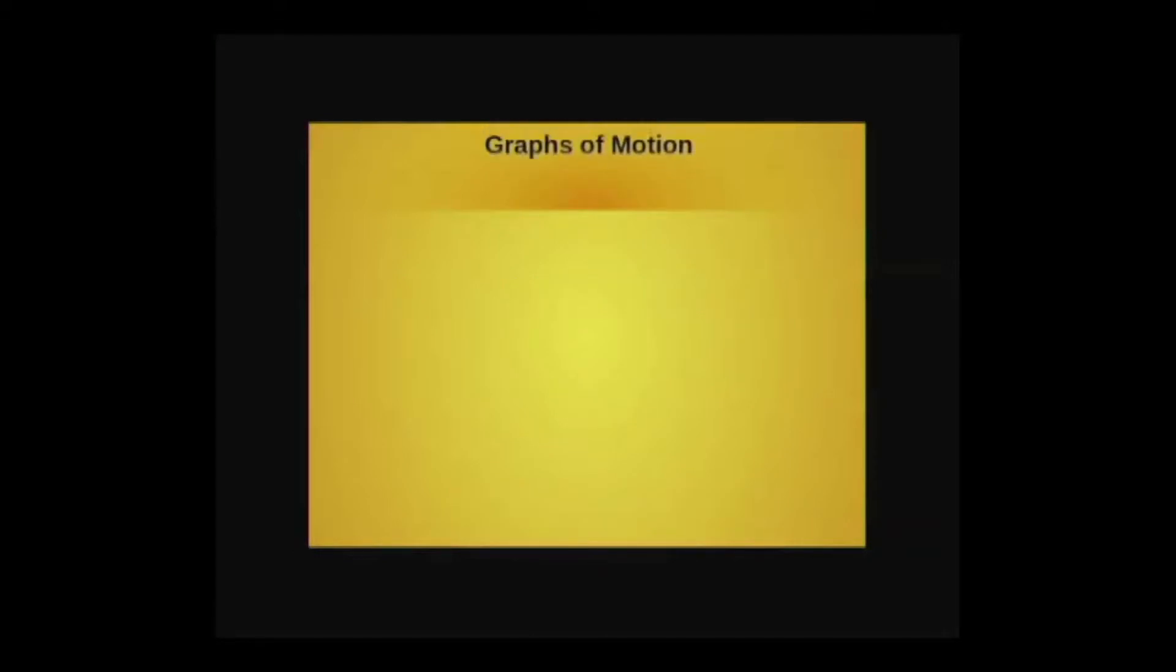Children, now let us see the mind map of graphs of motion. We will learn motion. Through the motion, we will learn displacement, distance, and time. With these three, we can learn average speed.